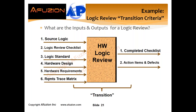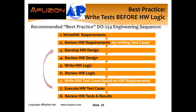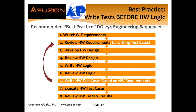A best practice: this is the typical traditional DO254 engineering sequence — write requirements, review them, develop design, review it, write the logic, review it, write test cases, execute test cases, review. That's traditional, but it's very inefficient if the requirements aren't great. What's the best way to review requirements? By writing the test cases. Move the hardware test cases — their review — as part of the hardware requirements review. Review those requirements by writing the test cases. Get that design right before you implement it.